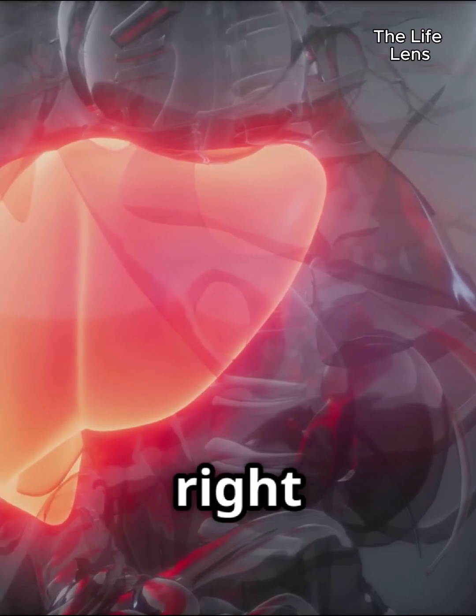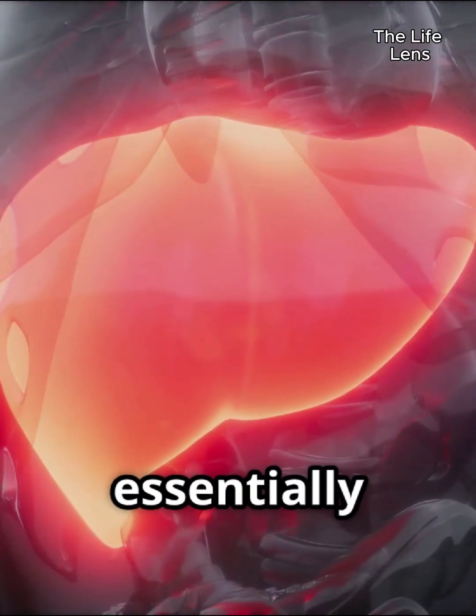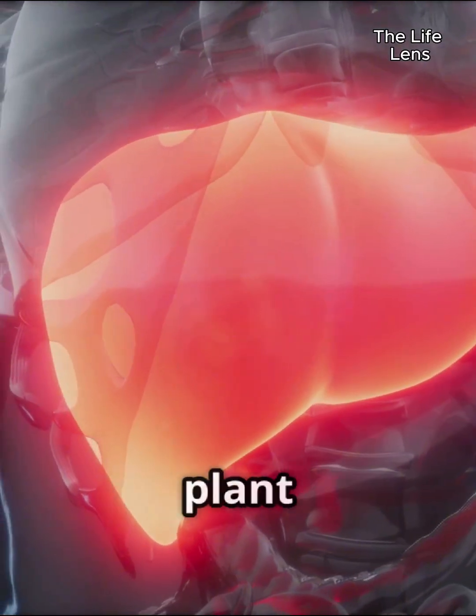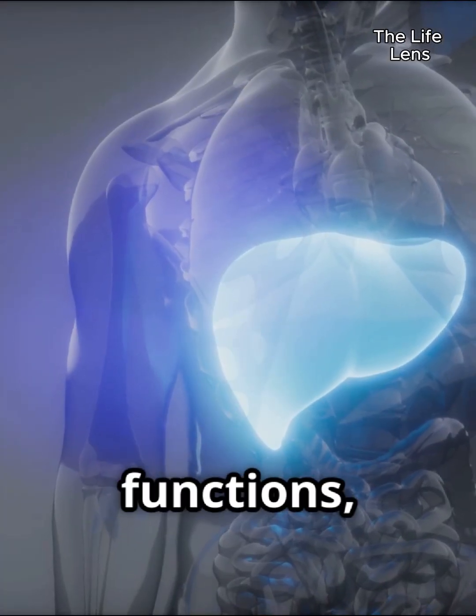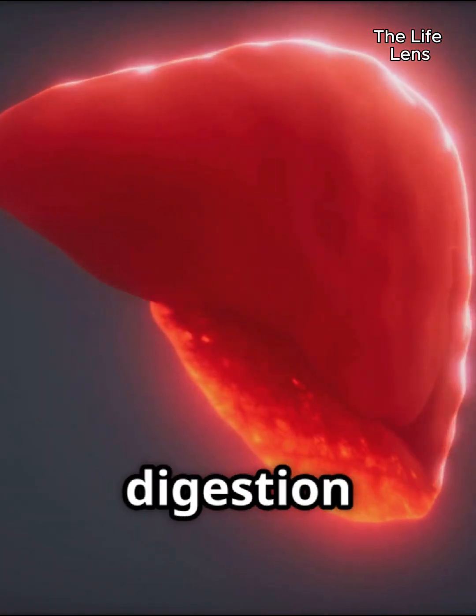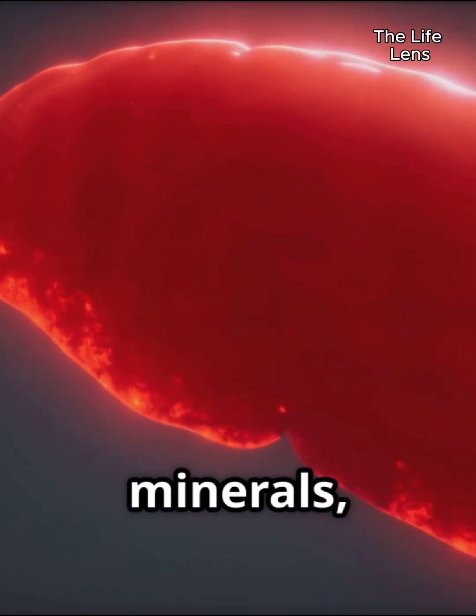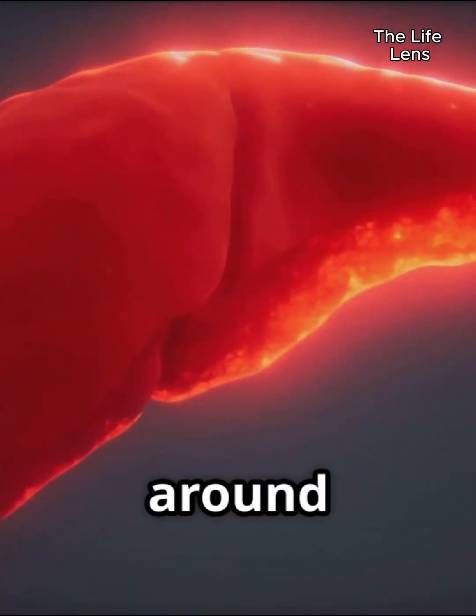Situated in the upper right quadrant of your abdomen, this reddish-brown powerhouse weighing about 3 pounds is essentially your body's primary chemical processing plant and detoxification center. It performs over 500 vital functions, many of which are crucial for your survival. From filtering your blood to producing bile for digestion and storing essential vitamins and minerals, the liver is a true workhorse, operating silently but effectively around the clock.